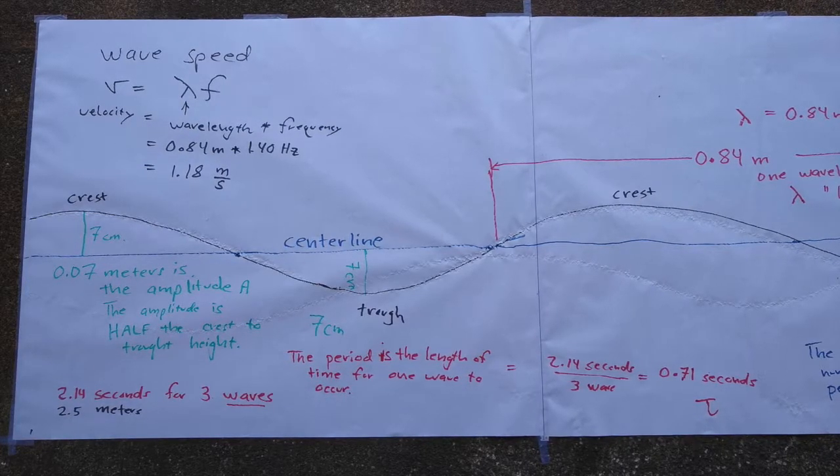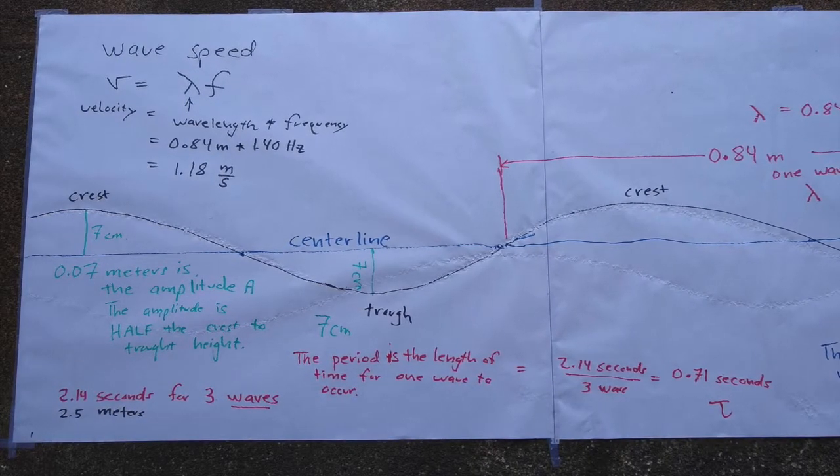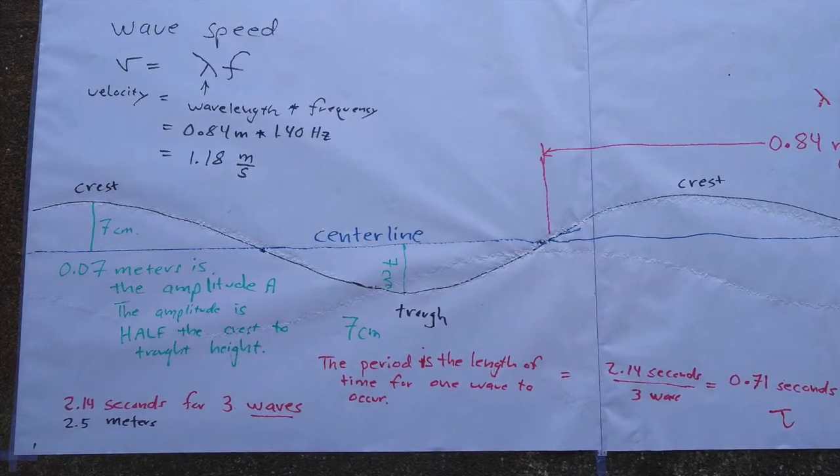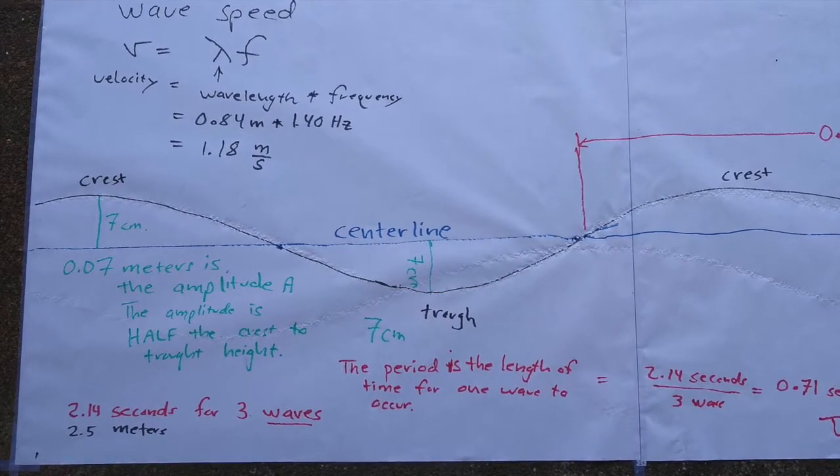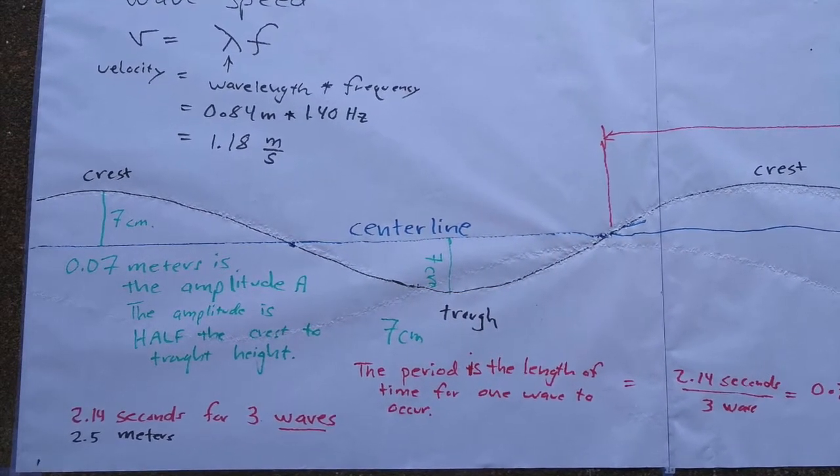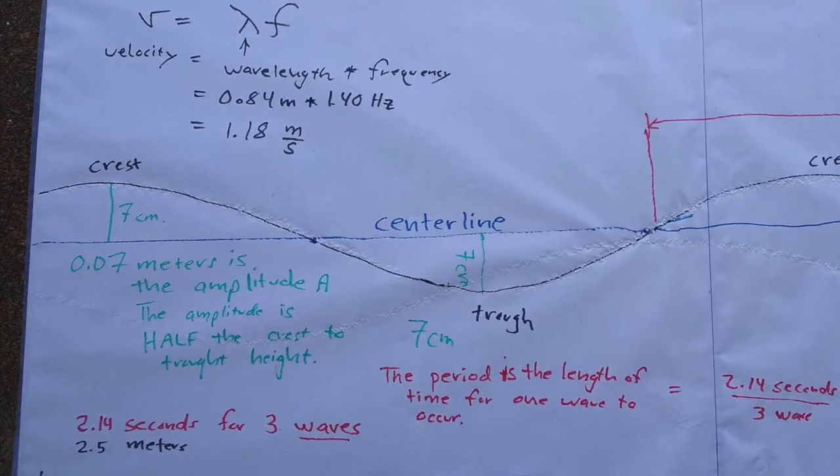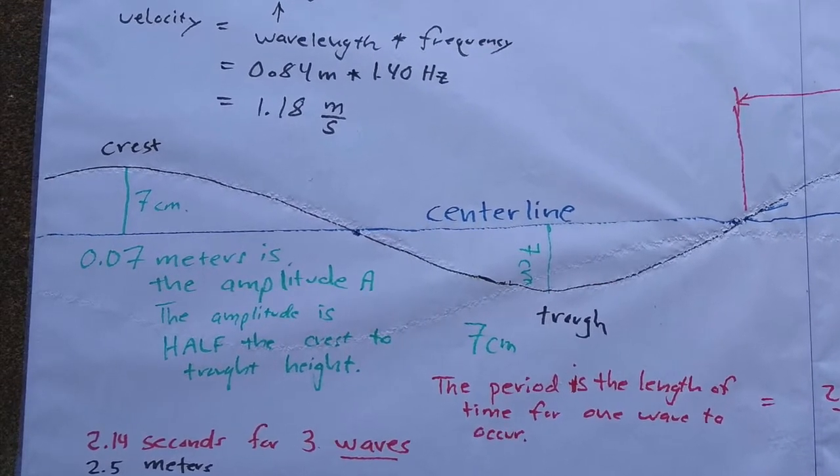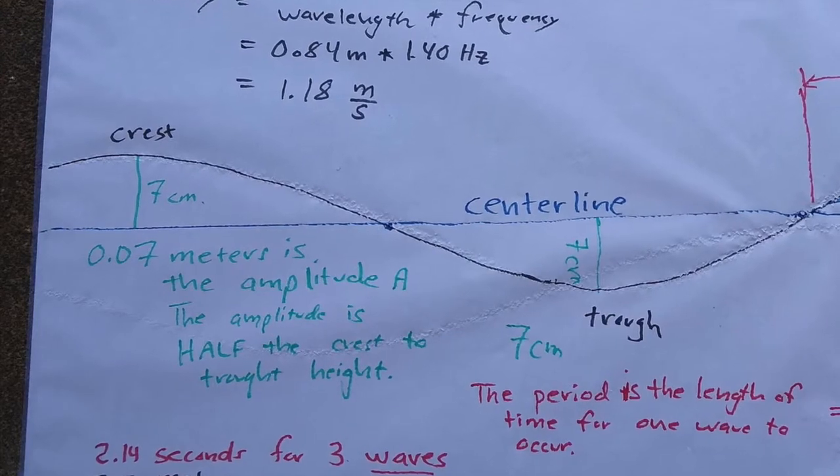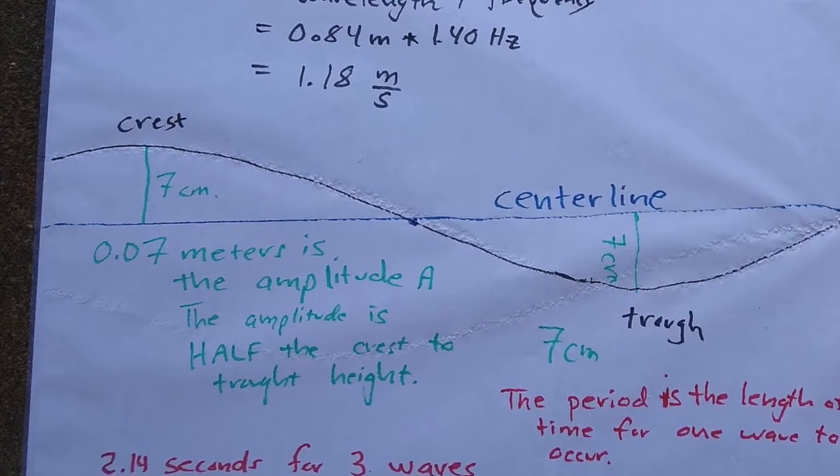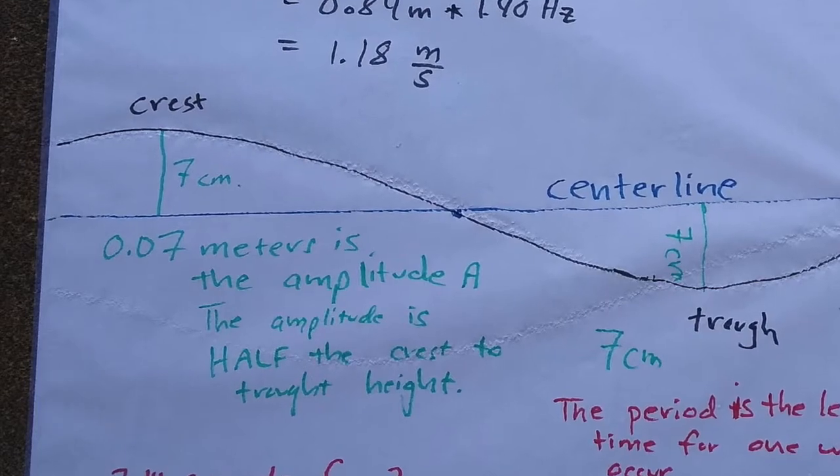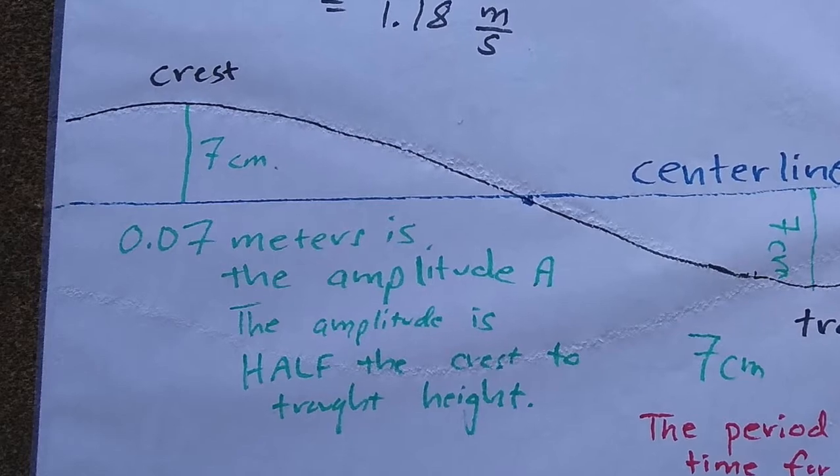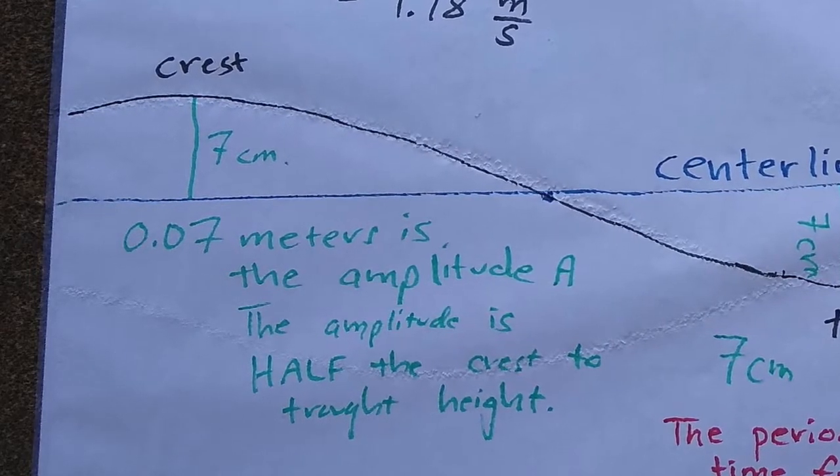While the wavelength is a distance along the center line, the length of the wave, the distance from the center line to the top of the crest or from the center line down to the trough is called the amplitude. This one is confusing. It's not the distance from the bottom of the trough to the top of the crest. It's half that distance. It's a distance from the center line to the top of the crest or from the center line down to the bottom of the trough. So you can see it's about 0.07 meters, roughly seven centimeters, in this diagram.